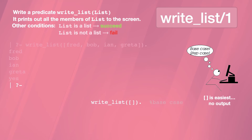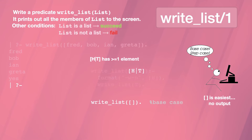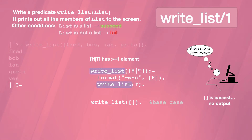Let's give that a comment. Next is the step case, which should process non-empty lists. That can be written using the list constructor function. This expression represents a list with one or more elements. Here is the full rule. It outputs H and then processes T. The predicate in the head of the rule is the same as the final one in the body, so this rule is a recursive step case.